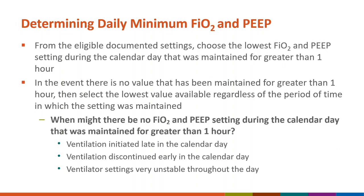How do you determine the daily minimum FIO2 and daily minimum PEEP? From the eligible documented settings, you will choose the lowest FIO2 and PEEP setting during the calendar day that was maintained for greater than one hour. If there is no value maintained for more than one hour, then select the lowest value available regardless of the period of time the setting was maintained. This may occur if ventilation was initiated late in the calendar day, discontinued early, or if ventilator settings are very unstable throughout the day.